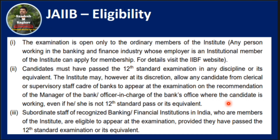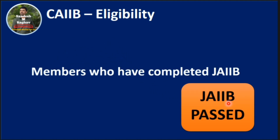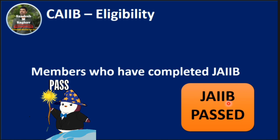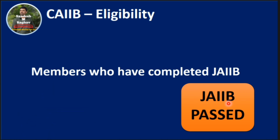For JAIIB eligibility, you need to become an ordinary member of this institute. First, check that your company is a member of IIBF, then you can register as an ordinary member. The second condition is you need to have completed 12th standard. If you have not completed 12th, with special permission from your company, you can take the JAIIB examination. For CAIIB eligibility, members who have completed the JAIIB examination and met other rules are eligible to appear for CAIIB.